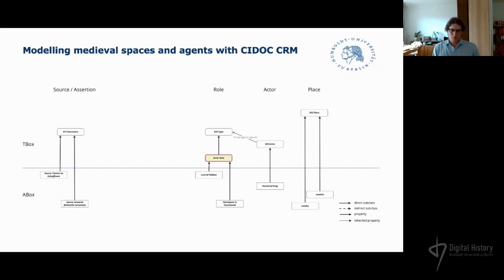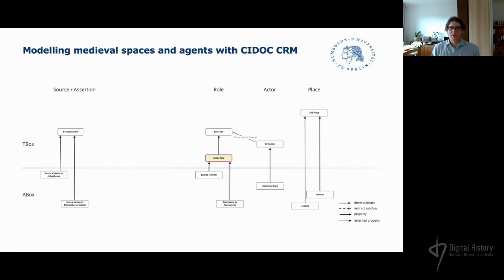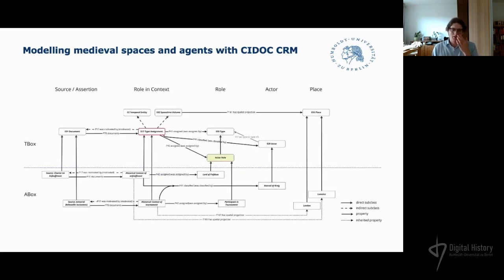Now we could simply connect actor, place, and type. But then we would be back at our model from the start and we'd lose the historical context in which a certain role is important. To model this context, we can use the type assignment class from CIDOC CRM. In CIDOC logic, this is considered as a temporal entity or event.